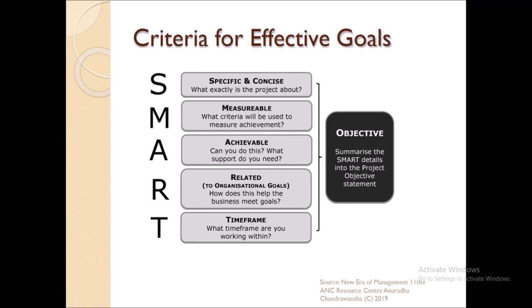Goals should be specific — distinct and precise about what exactly the project or operation is about. They should be measurable: without measuring goals you cannot expect them to succeed, so criteria must be defined to measure achievement. Goals should be achievable — goals that are not achievable are not real goals. They should be related to your organization and to the overall organizational objectives, and they should have a time frame.